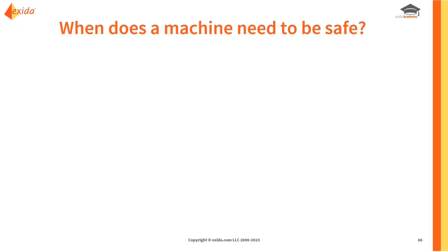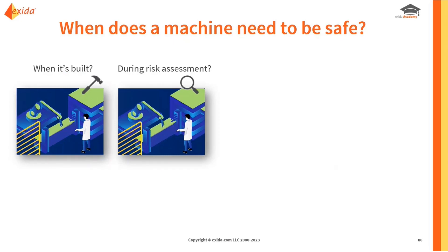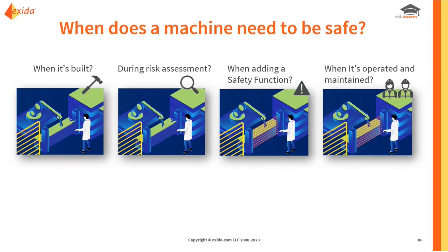The first simple question that will drive the rest of the course: when does a machine need to be safe? Does it need to be safe when it's built? When we do a risk assessment on it? When we decide to add a safety function like a light curtain? Or when we operate and maintain it?